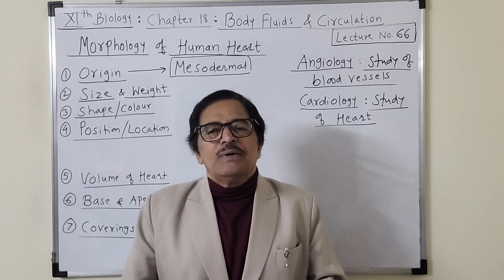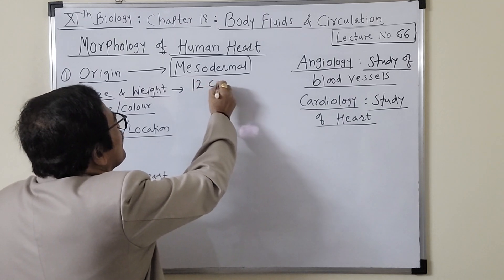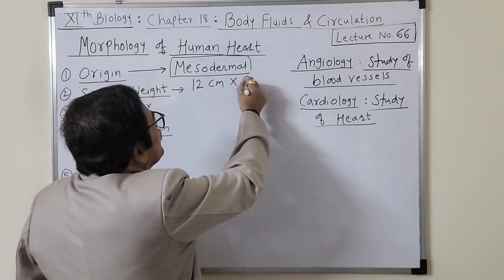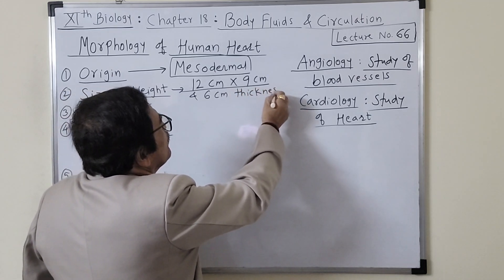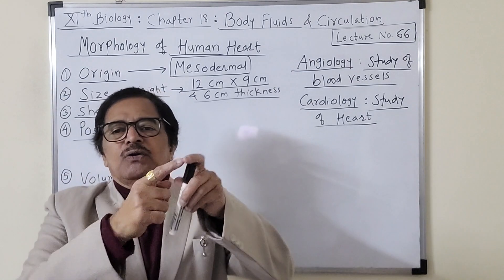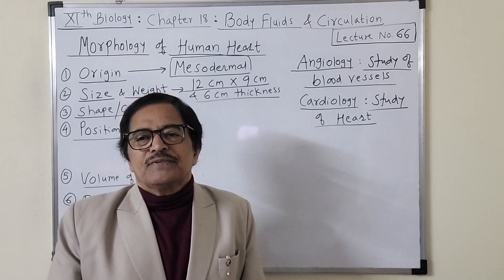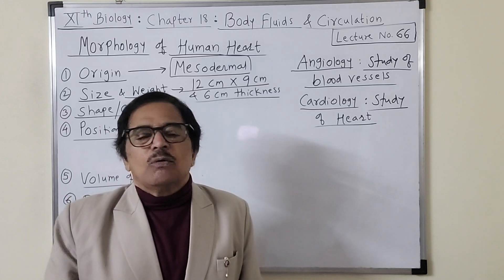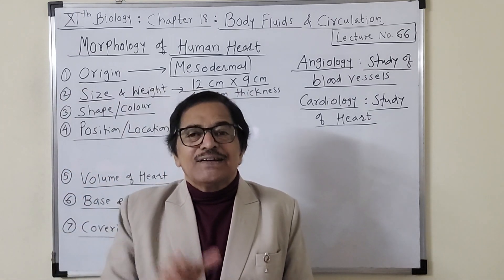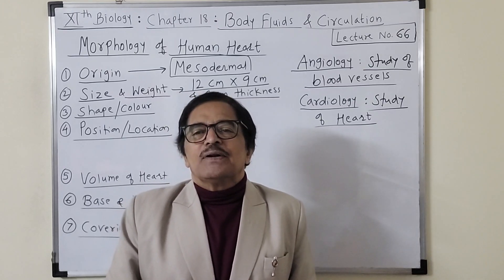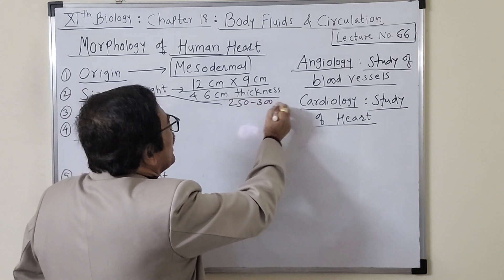The heart is originated from the mesoderm layer. Regarding size: it is 12 centimeters in length, 9 centimeters in width at the broadest end, and 6 centimeters in thickness. It has a conical shape, so at the broadest end it is 9 centimeters. The weight of the heart is approximately 250 to 300 grams.